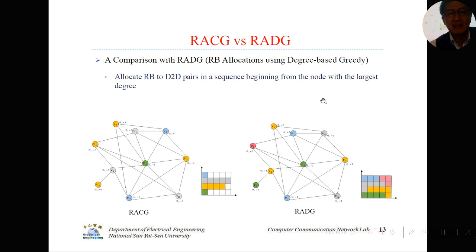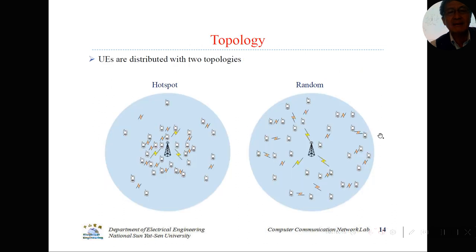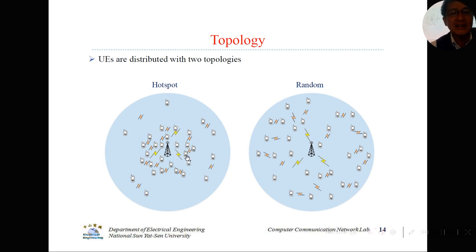For simulation, we need to produce some topology. We compare the hot spot topology — where all the UE are concentrated around the base station at high density — and the random topology, which is uniformly distributed. For hot spot, we present two variants: a high density hot spot where all nodes are concentrated in the center around the base station, and a low density hot spot where they are more loosely distributed.